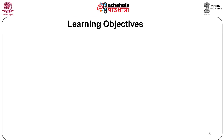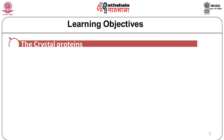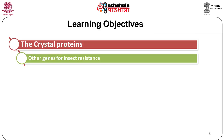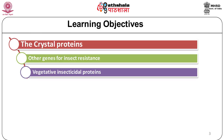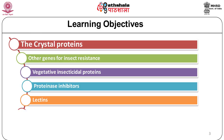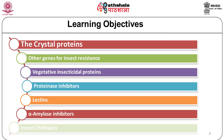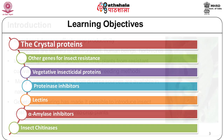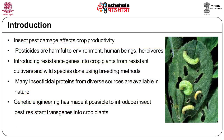These proteins are effective without causing problems to mammals, beneficial insects, and other organisms. In this module we will study about the different strategies of insecticide resistance in plants. The learning objectives of this module are: crystal proteins, other genes for insect resistance, vegetative insecticidal proteins, proteinase inhibitors, lectins, alpha amylase inhibitors, and insect chitinases.